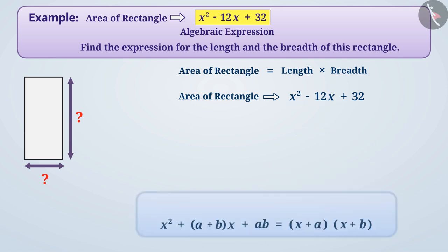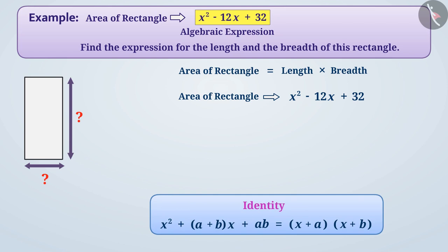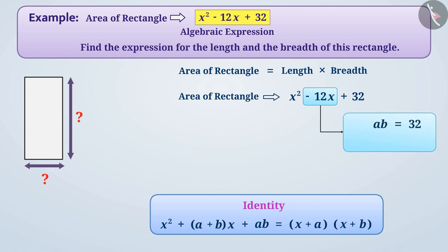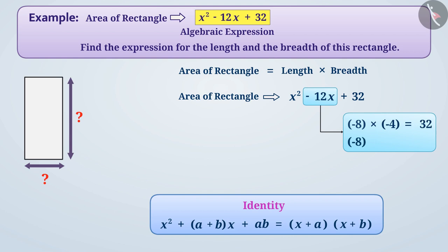Here we will use this identity. We will split the middle term, i.e., the coefficient of x, into two numbers a and b such that ab = 32 and a + b = -12. Since (-8) × (-4) = 32 and (-8) + (-4) = -12, we will choose -8 and -4.